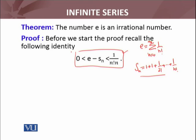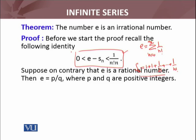Proof by contradiction: we will suppose that e is not irrational. Suppose on the contrary that e is a rational number. Then by the definition of rational numbers, e could be written as p over q, where p and q are positive integers.